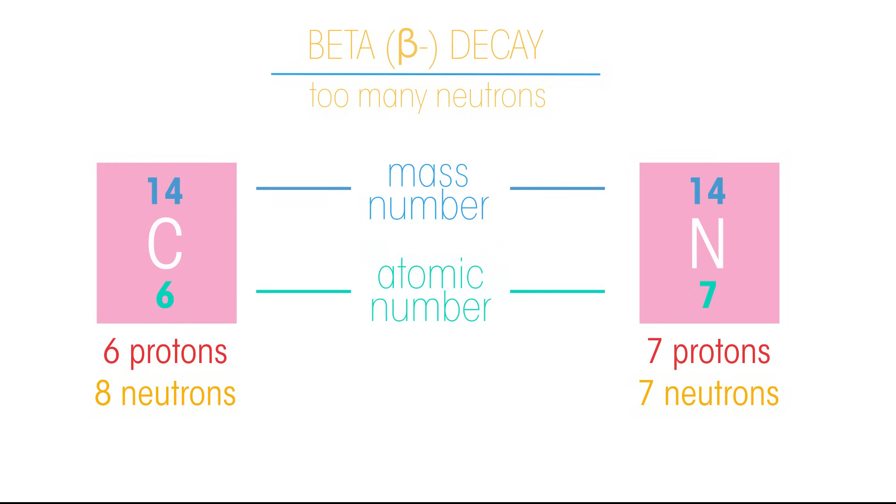By losing a neutron whilst gaining a proton, the mass number of the atom remains the same, but the atomic number increases by one. A new element is formed that is one place higher in the periodic table.